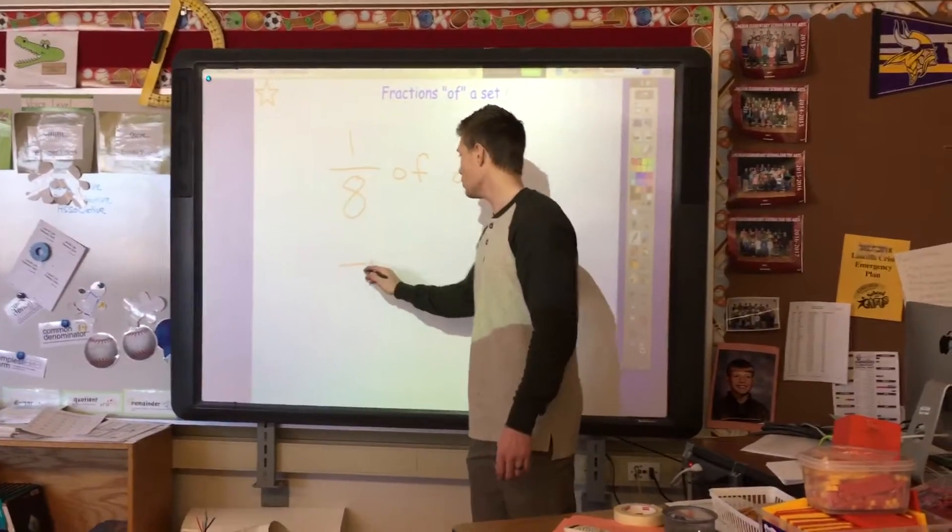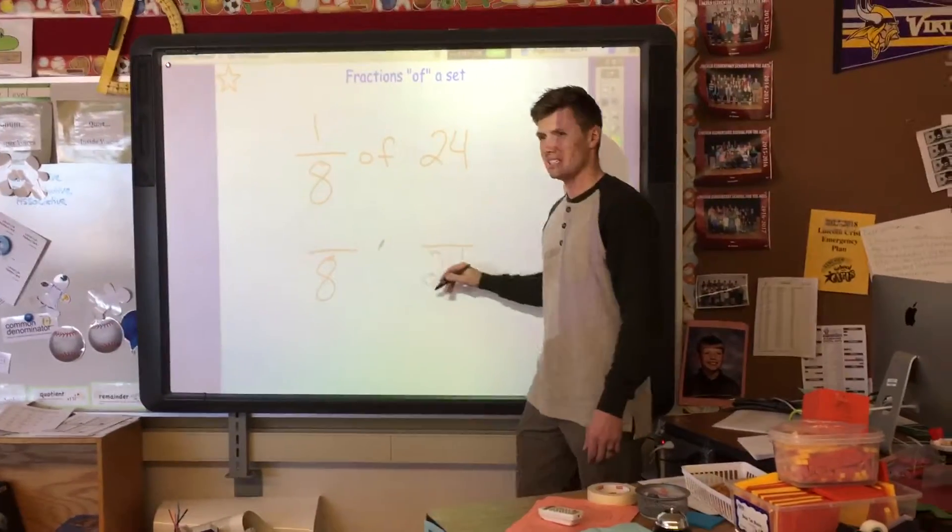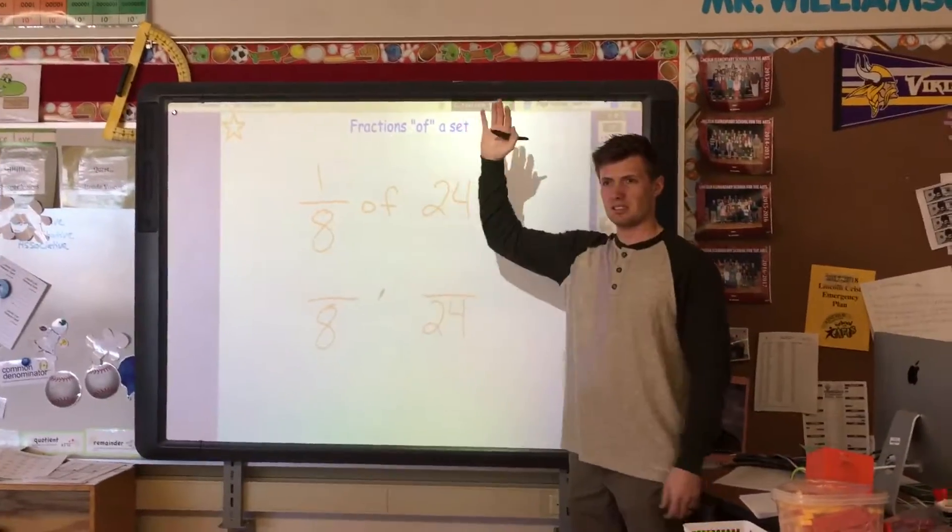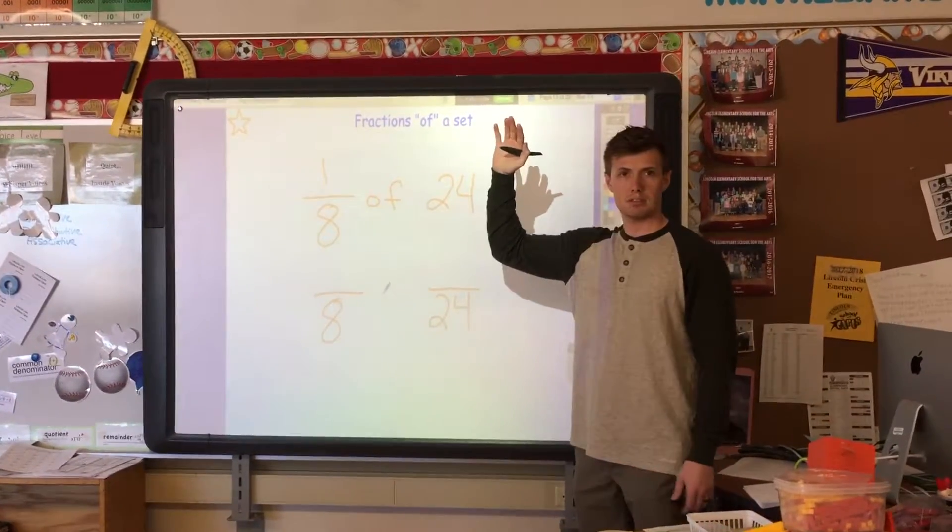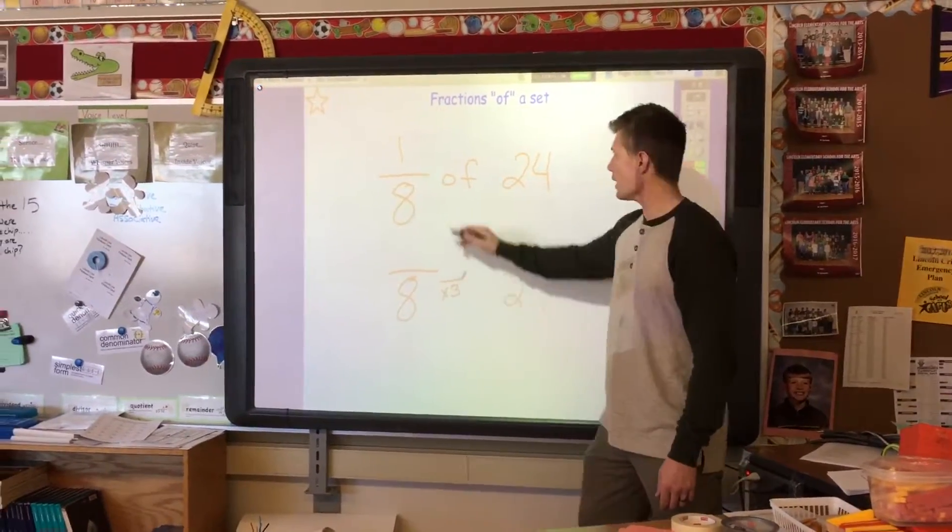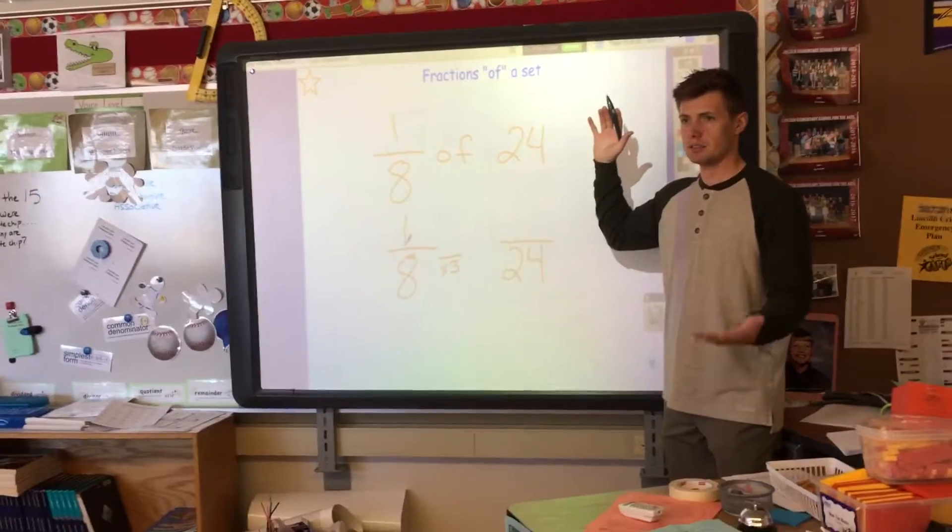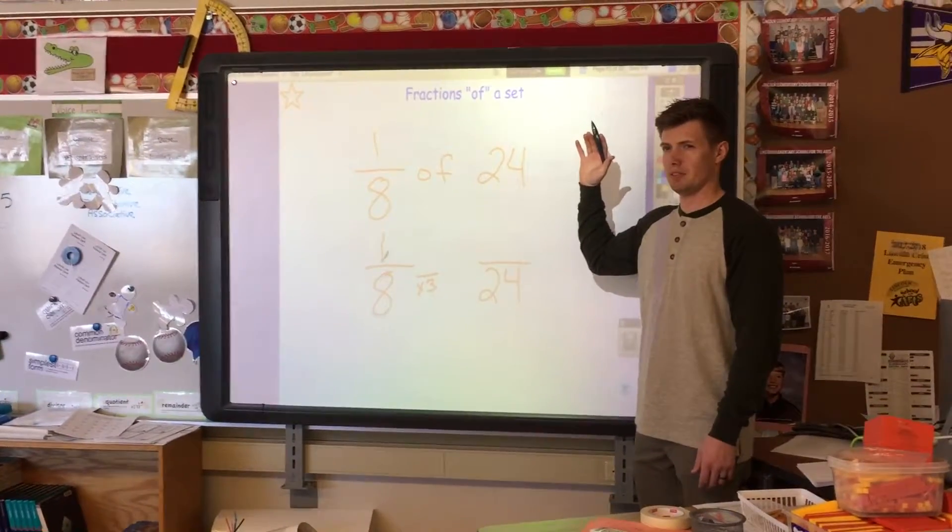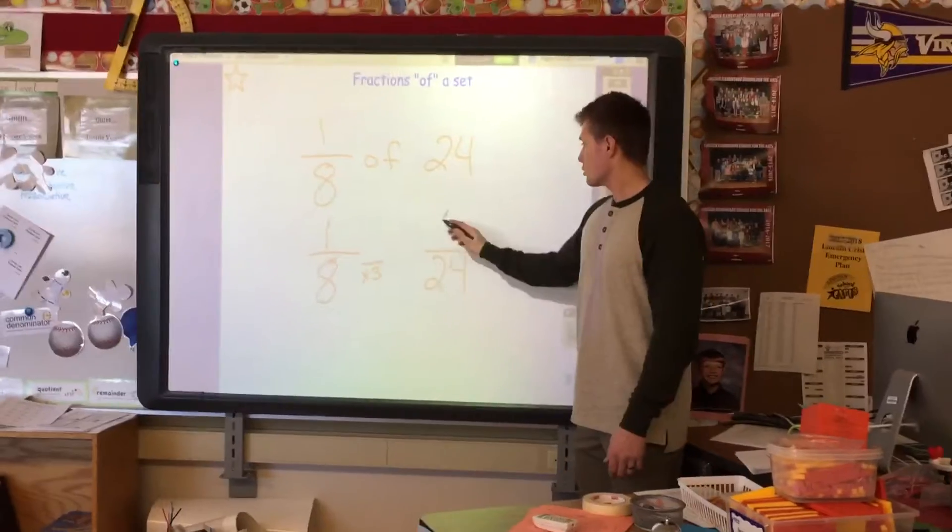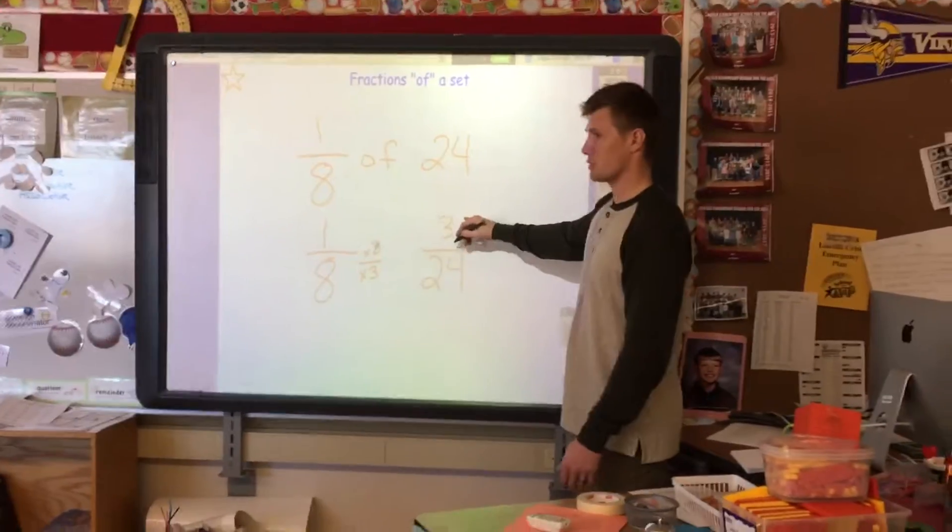I want to know, how are eighths and twenty-fourths, how did they change? How did I change eighths into twenty-fourths? Let's use our math facts. What do we know? Times three. So if I have one out of eight, how many out of twenty-four would that be? Does anybody have any idea? Elliot? Three. It would be three. Because what I do to the denominator, I would also do to the numerator. So one-eighth is the same as three-twenty-fourths.